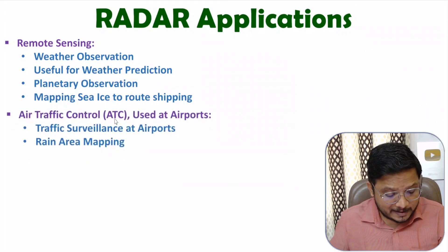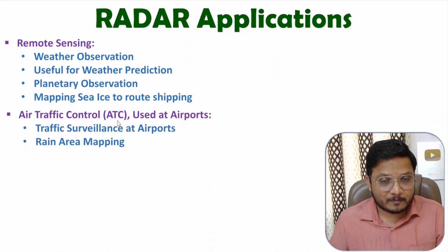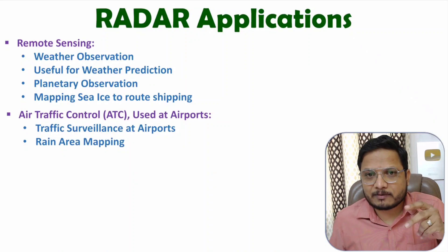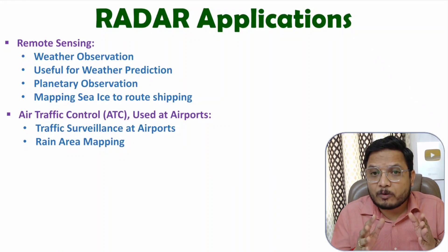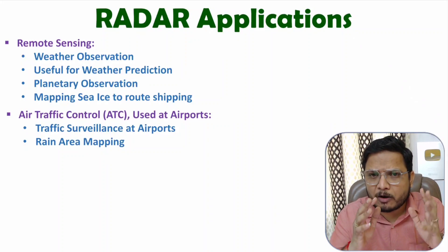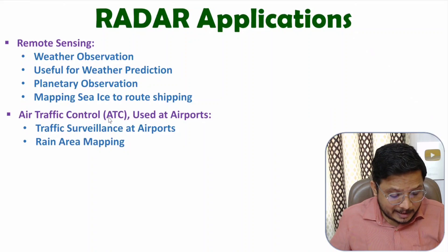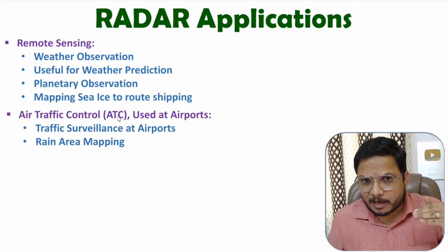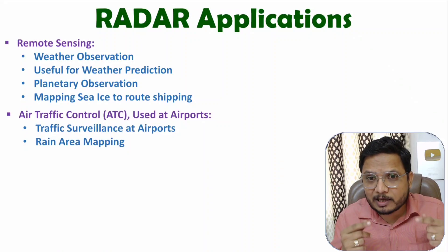The second application is ATC — Air Traffic Control. These applications are associated with airports, where traffic surveillance of aeroplanes is done. Whenever planes are arriving at or departing from an airport, this radar application handles routing, time scheduling, whether airspace is free, and how much traffic is in the air. In rain area mapping, if a plane is approaching and rain is mapped in the nearby distance, rerouting or rescheduling can be done with this application.